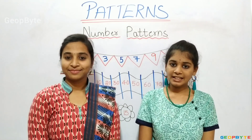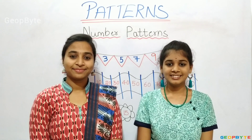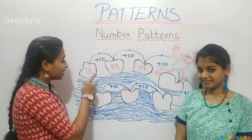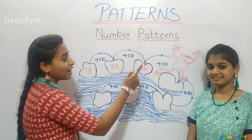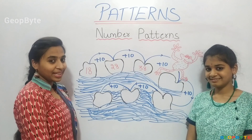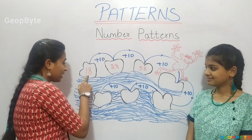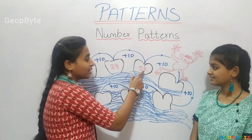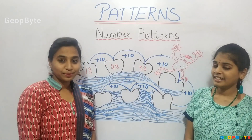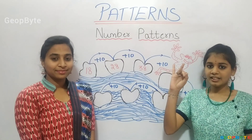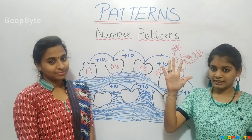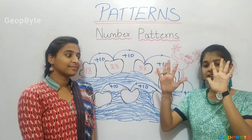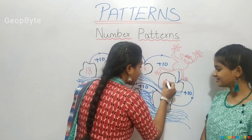Hey kids, see here. We have a river and stones in the river. A frog is jumping on the stones. There are numbers inside the stones. Eighteen plus ten — twenty-eight. Plus ten — thirty-eight. Thirty-eight plus ten is how much? Let us count: thirty-nine... forty-eight. So forty-eight comes in this stone.